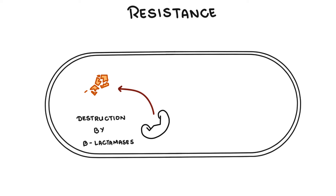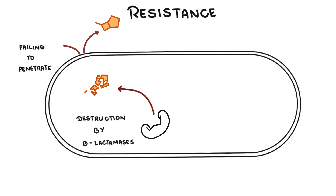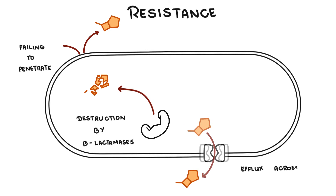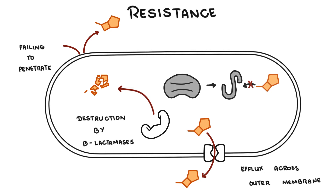Other forms of resistance include the failure of penicillin to penetrate the outer membrane of gram-negative bacteria. Bacteria can also have pumps that push the antibiotic out of the bacteria, specifically in gram-negative bacteria. Additionally, there is low-affinity binding of penicillins to target penicillin-binding proteins. Some bacteria may display more than one resistance mechanism, such as in MRSA.